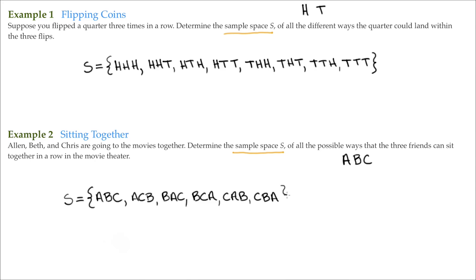We'll go ahead and close it off. And again, we can see all the possible ways that if the three friends went to the movies together, how many different ways they could sit next to each other. And there's one, two, three, four, five, six different ways that they could sit next to each other.